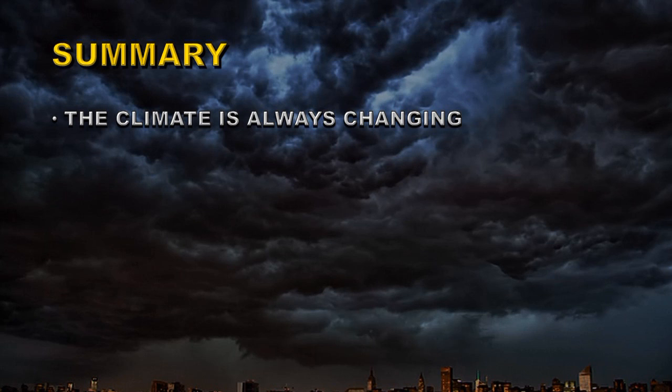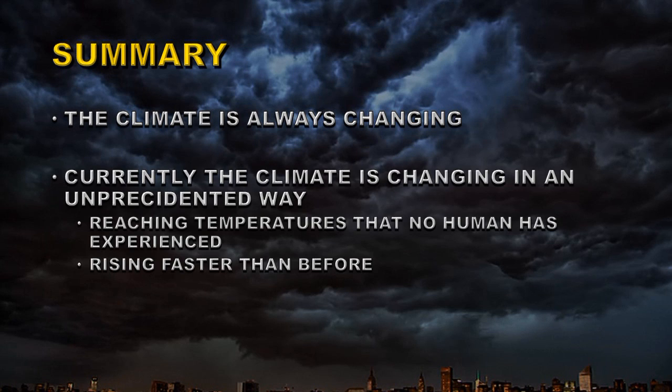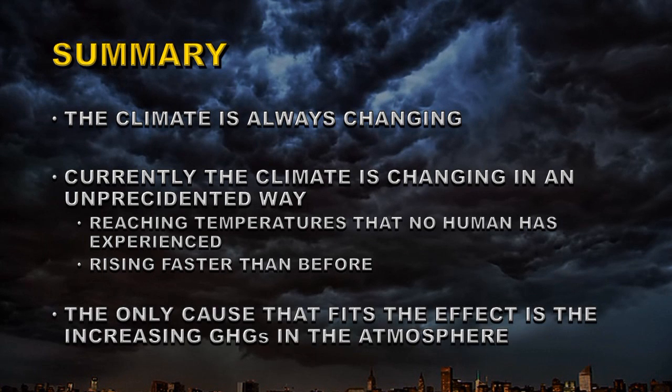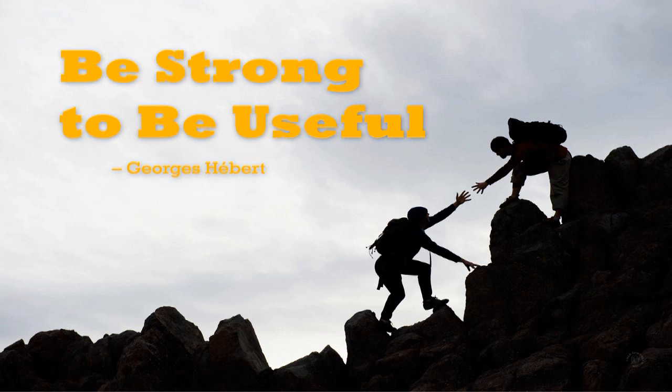So in summary then, the climate is always changing. That is a true statement but in no way does it detract from the anthropogenic global warming theory. Currently the climate is changing in an unprecedented way, reaching temperatures that no human has experienced or plant or animal for that matter, and is rising faster than ever before. The only cause that fits this effect is the increase in greenhouse gases in the atmosphere. So if you see somebody who is using the excuse that the climate has changed before and therefore global warming is not human caused, then you should post a link to this video. You can follow near real-time updates on my twitter channel drkstrong and I would appreciate any comments that you want to leave below. Thanks a lot. Until next time, goodbye.